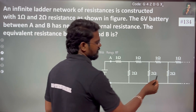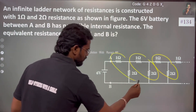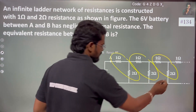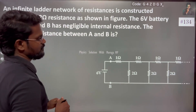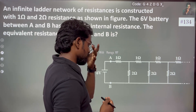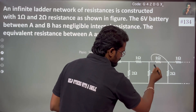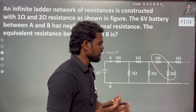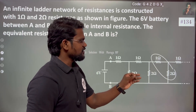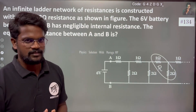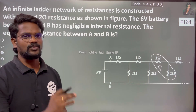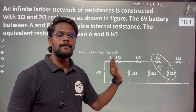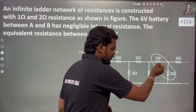Since the resistance pattern repeats as one, two, one, two... and since all sections are identical, we can make one key assumption: let the effective resistance be R. Because every section of the ladder is identical, the effective resistance looking into any rung is the same value R.